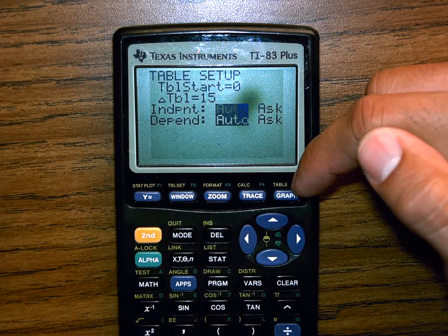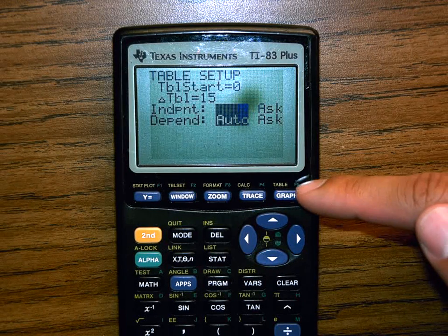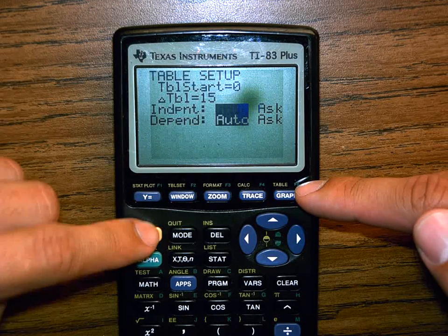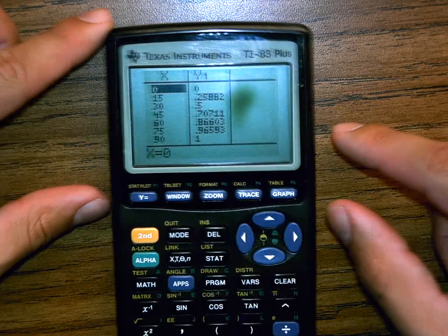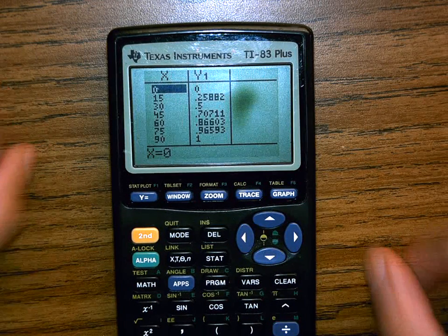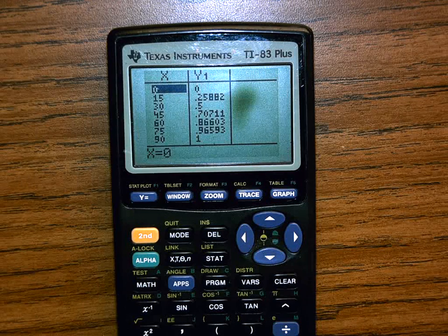So now I'm going to go to this button over here that says table. It's right above my graph key. I'm going to press second table and voila.